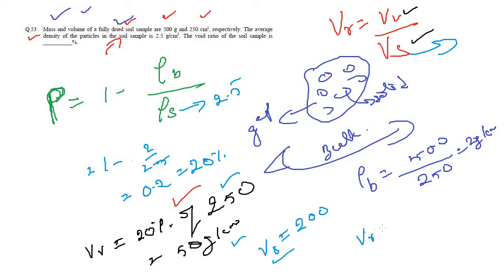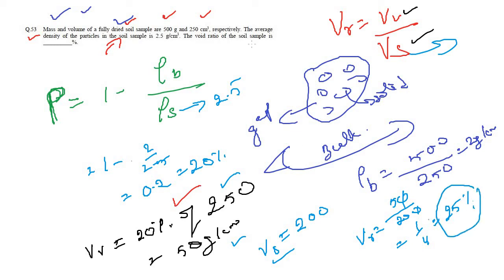Now apply it in the void ratio formula: V_r = volume of voids / volume of solids = 50 / 200 = 0.25, which is 25 percent. So the void ratio is 25 percent.